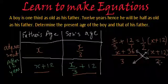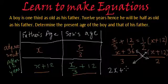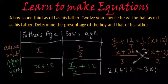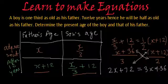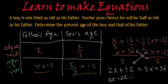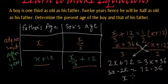Now let's cross multiply. The 2 in the denominator of the right-hand side gets multiplied by the numerator of the left-hand side, giving 2x + 72. This equals x multiplied by 3 is 3x, plus 12 multiplied by 3 is 36. Now let's use transposition: 3x minus 2x equals 72 minus 36, that is x equals 36.